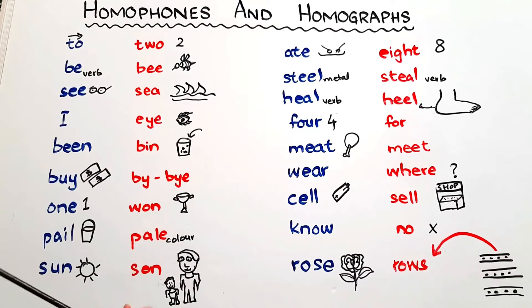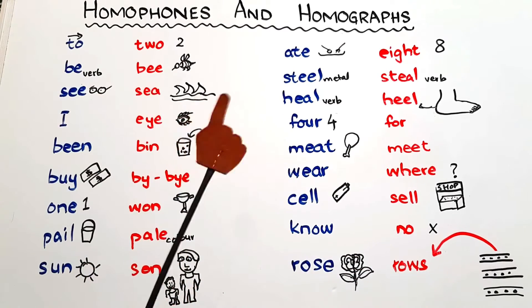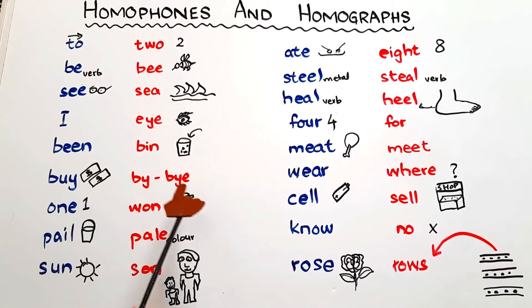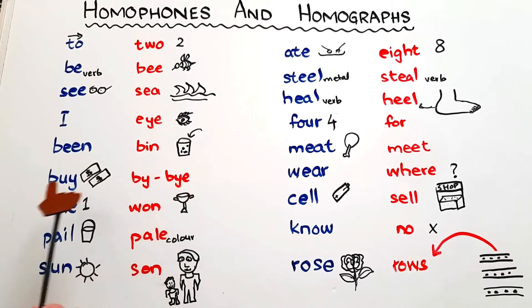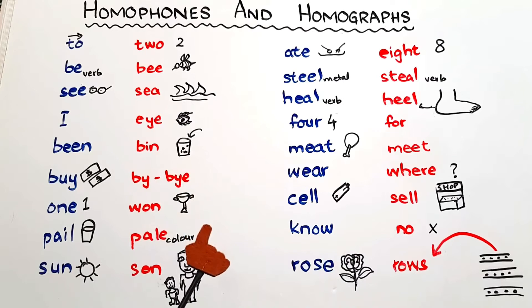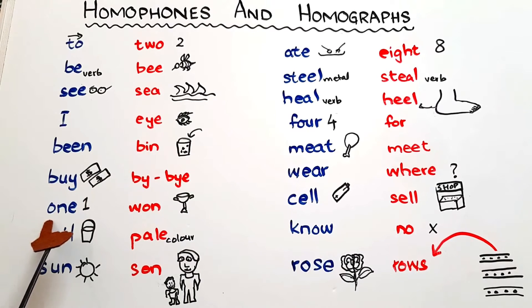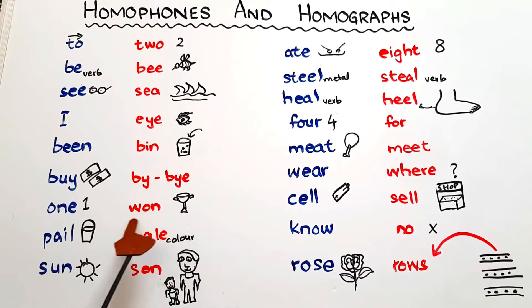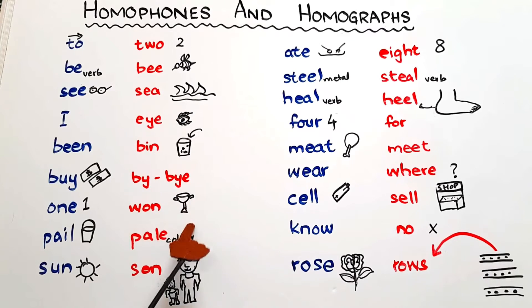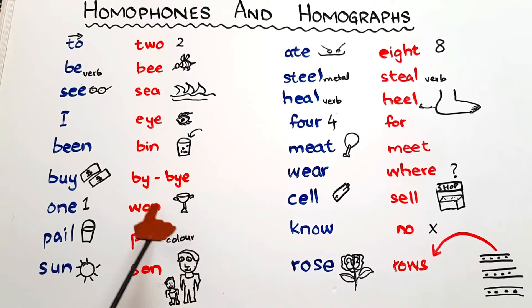And then we have the preposition 'by', as in 'sit by my side', and the word 'bye' when you are saying goodbye to someone. The pronunciation is the same but the spellings and meanings are all different. Then we have 'one', the number, and 'won' — the verb — as in 'I won the race'.